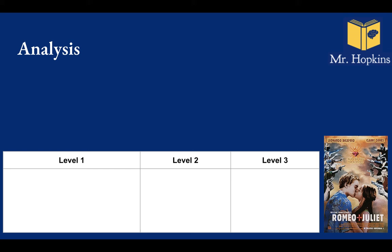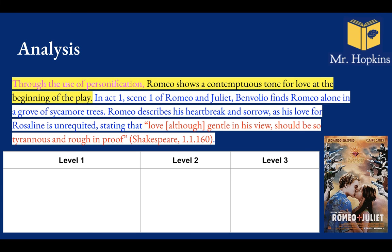Now let's have a look at analysis. In Romeo and Juliet, through the use of personification, Romeo shows a contentious tone for love at the beginning of the play. In Act 1, Scene 1, Romeo is sulking in a grove of sycamores, and Benvolio finds him and goes to console him. Romeo describes his heartbreak and sorrow as his love for Rosaline — the girl he has a crush on — is unrequited, stating that love, 'although gentle in its view, should be so tyrannous and rough in proof.'